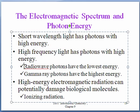So, radio wave photons have the lowest energy. They have the longest wavelength and the lowest frequency. And gamma ray photons have the highest energy. They have the shortest wavelengths and the highest frequency.